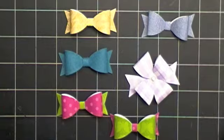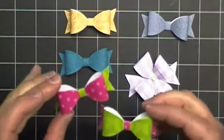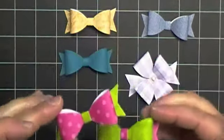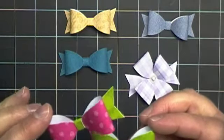A few other fun ideas that you could do with this bow is use two different patterned papers and then you can mix and match them. That makes a really cute bow too.